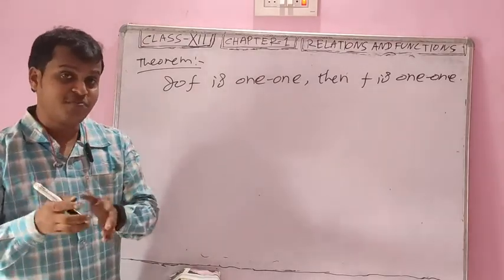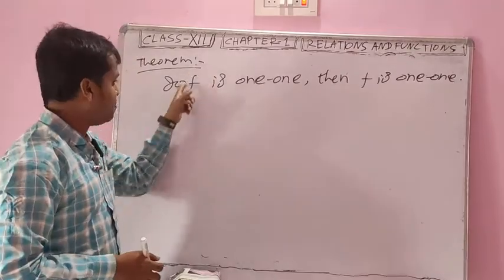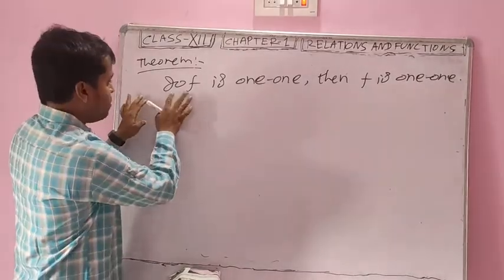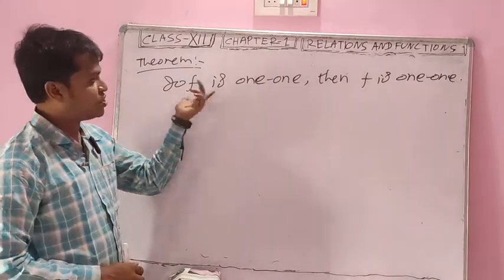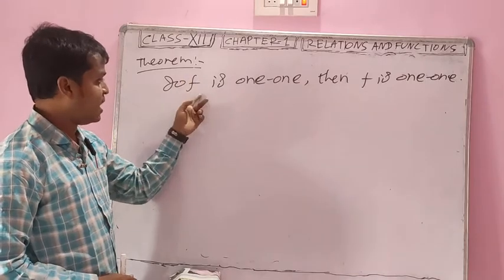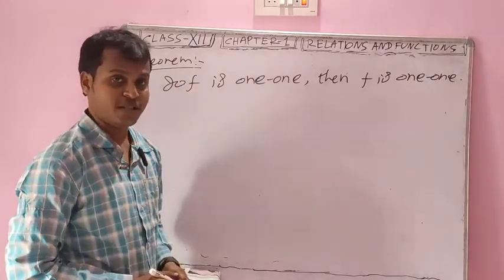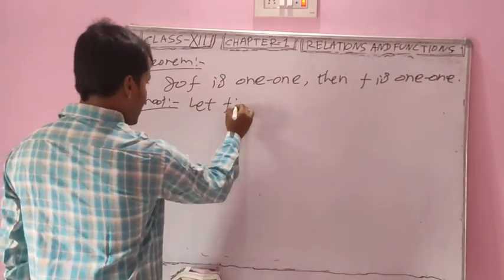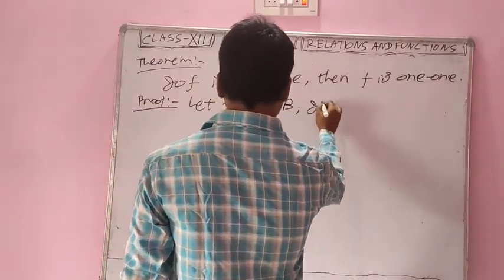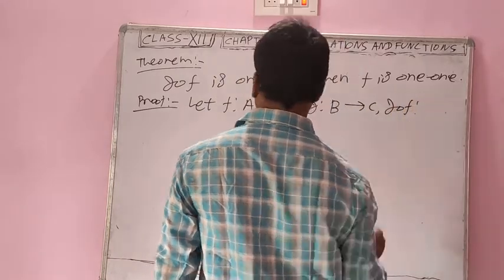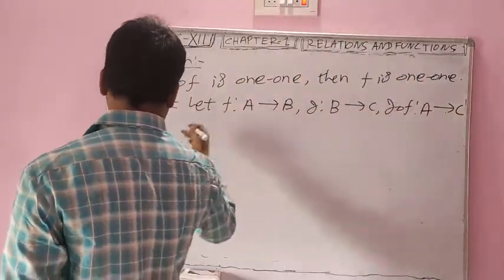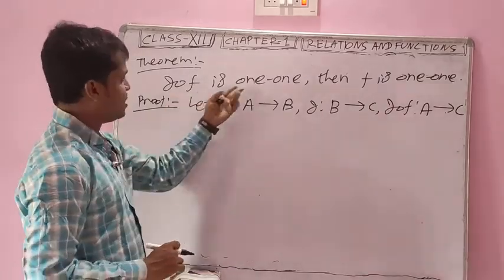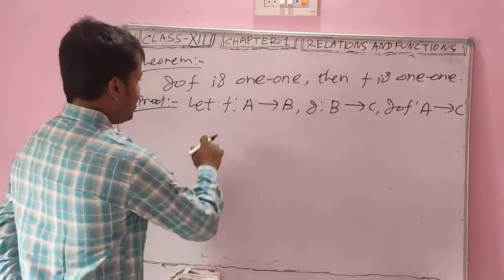First, let's prove: if g∘f is one-one, then f is one-one. Suppose f is a function from A to B, and g is a function from B to C. Then g∘f is a function from A to C, by the definition of composition. What is given? g∘f is one-one. We have to prove f is one-one. Let A be the domain of f, and take any two arbitrary elements x, y from the domain. Assume f(x) = f(y), where x, y belong to the domain of f.